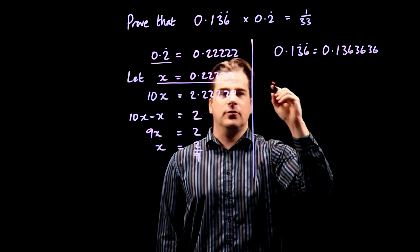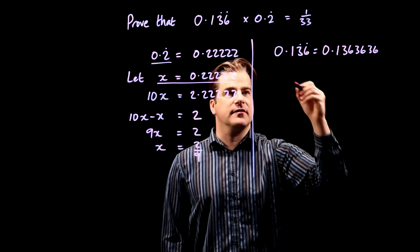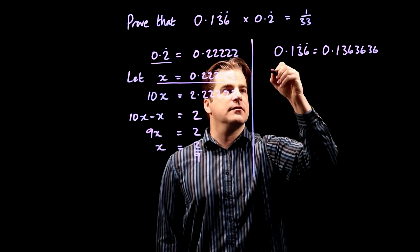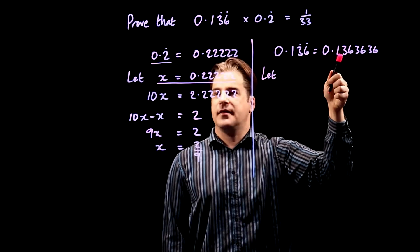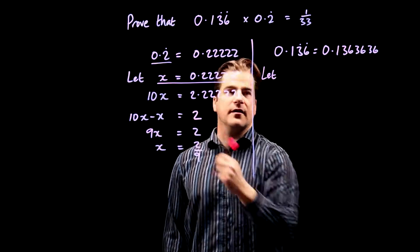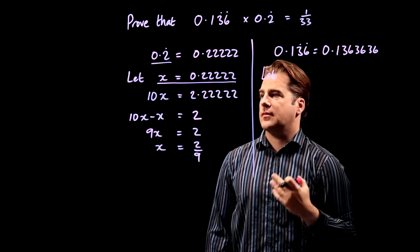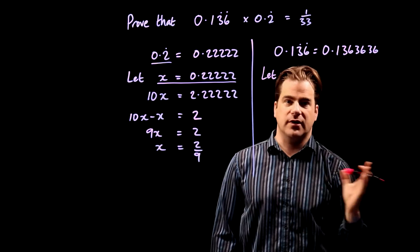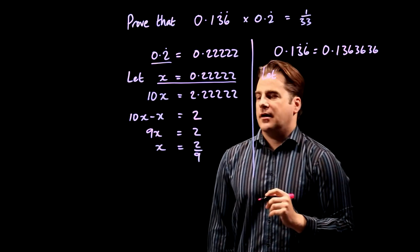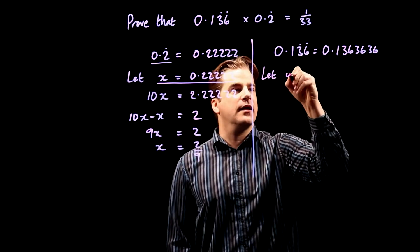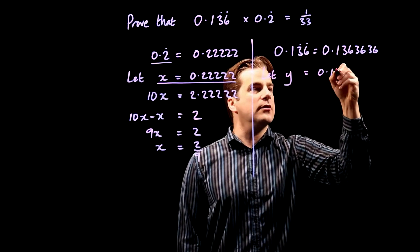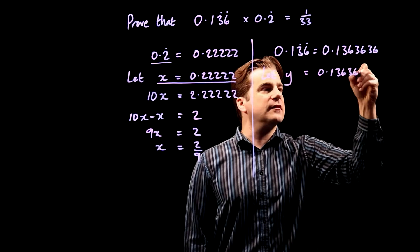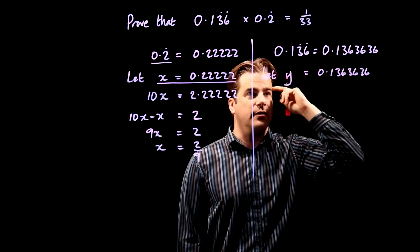Now, same thing. Well, almost same thing. We're going to multiply by 100 this time. That's the only difference. So we say, let this thing, we won't call it x this time. Just to avoid confusion. Let's call it y. So we say, let y equal 0.1363636 and so on and so on.